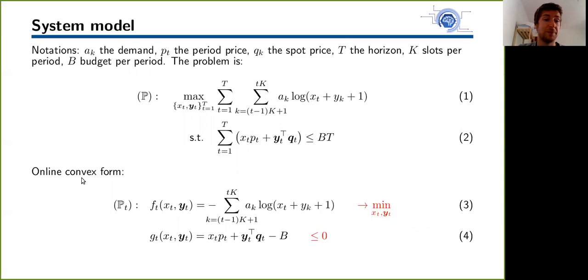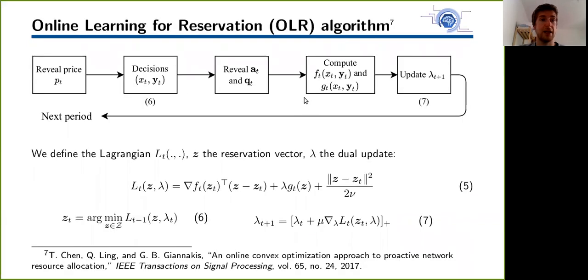So we formulate the online convex form of problem P, which is problem PT. Now we try to minimize this convex function while respecting this constraint function of the budget. Here we have a minus sign to have a convex form because the logarithm is a concave function.